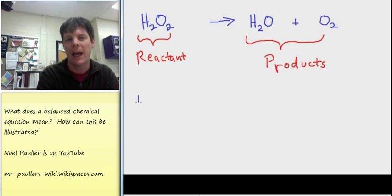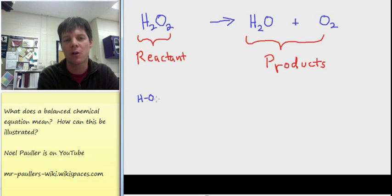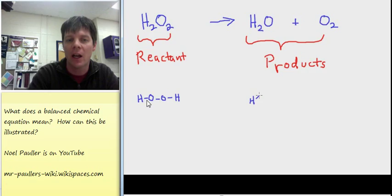Now what we want to do is to take a look at how would we represent this if we were writing molecular structures. So the structure for hydrogen peroxide is that there are two oxygen atoms bonded together with a single covalent bond. And at each end, there's a hydrogen atom bonded to those.